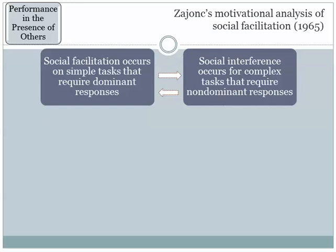Researchers replicated Triplett's findings, but in some cases failed to do so — in some cases the presence of others actually seemed to inhibit task performance. It wasn't until 1965 when Robert Zajonc offered his motivational analysis of social facilitation to clarify when precisely social facilitation effects will occur.